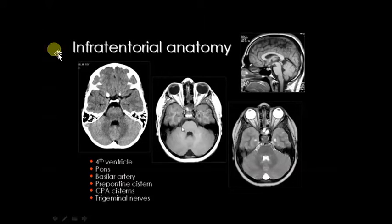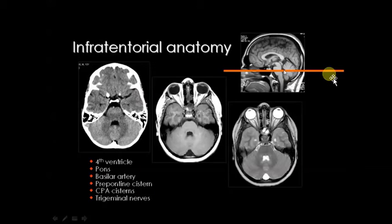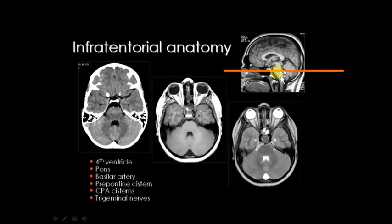Today we will discuss infratentorial anatomy. Here is the cerebellum. If you see a cut section, near the cut you can see structures in front of the cerebellum — there is the fourth ventricle, and in front of the fourth ventricle there is the pons. The fourth ventricle is very large, sitting in between the cerebellum and pons.